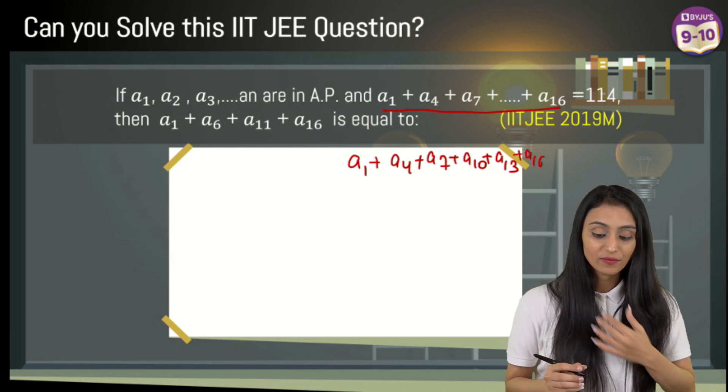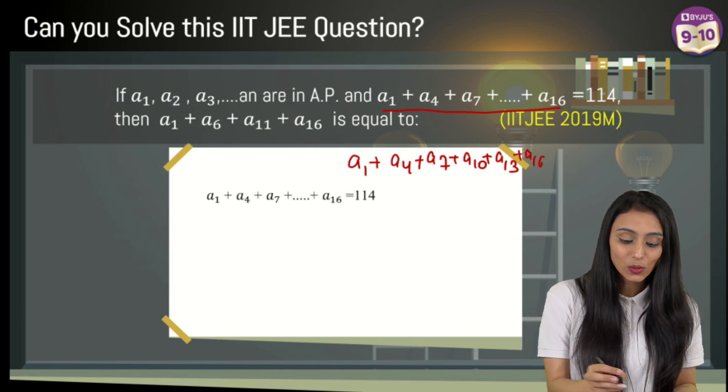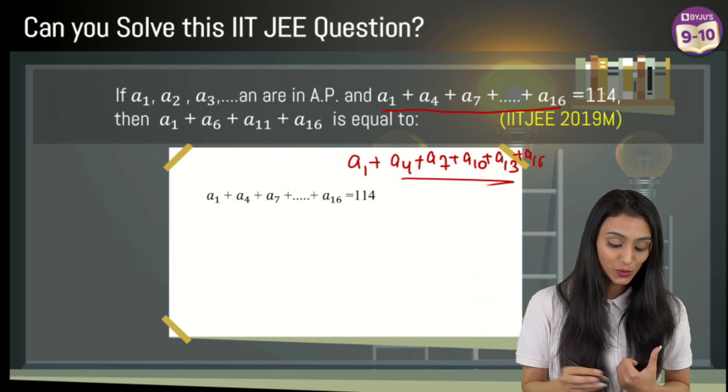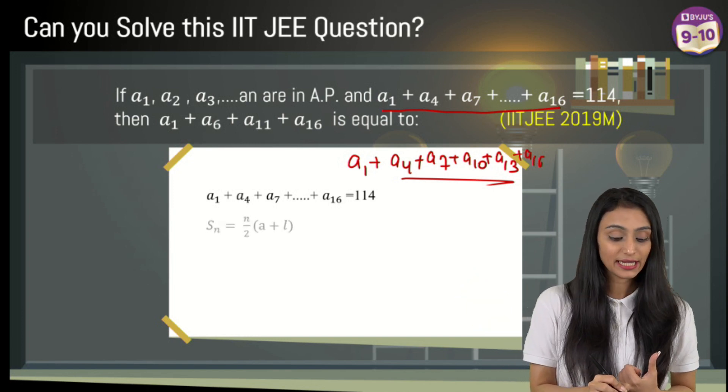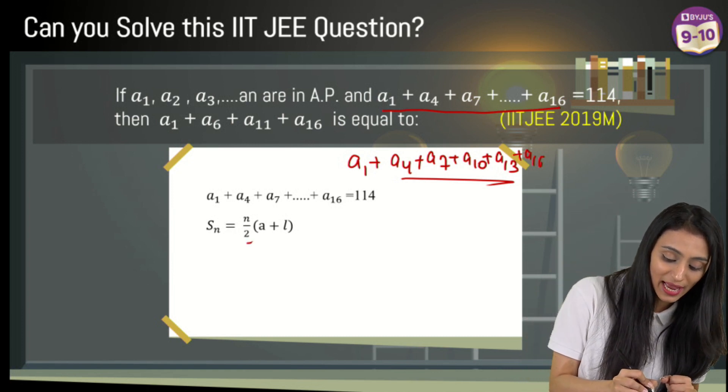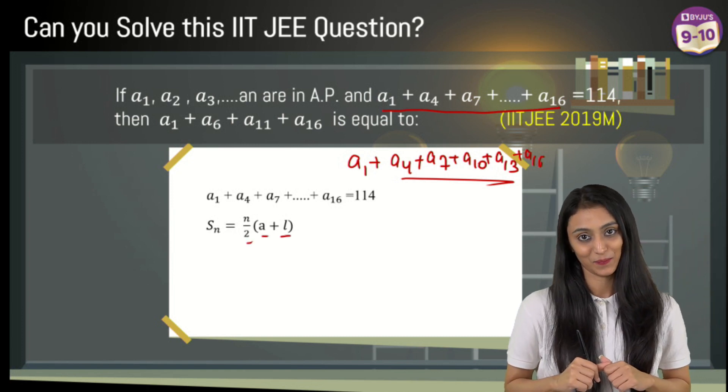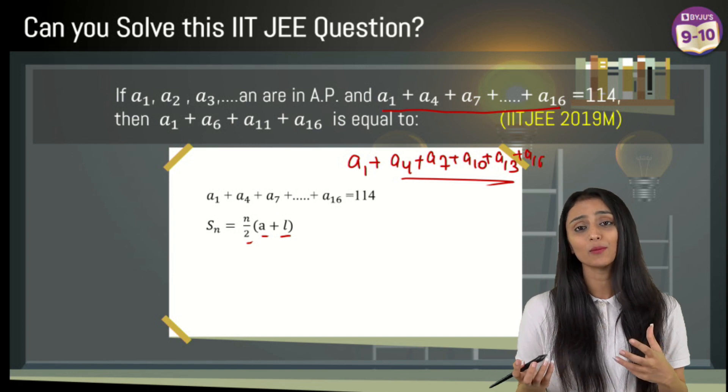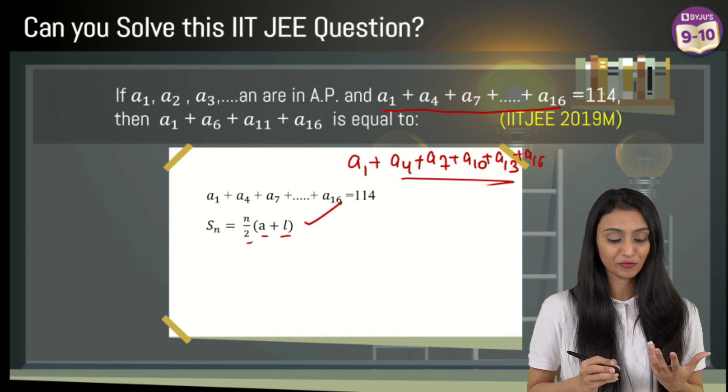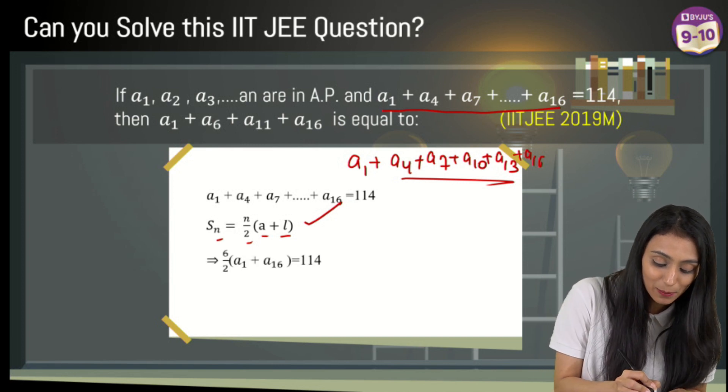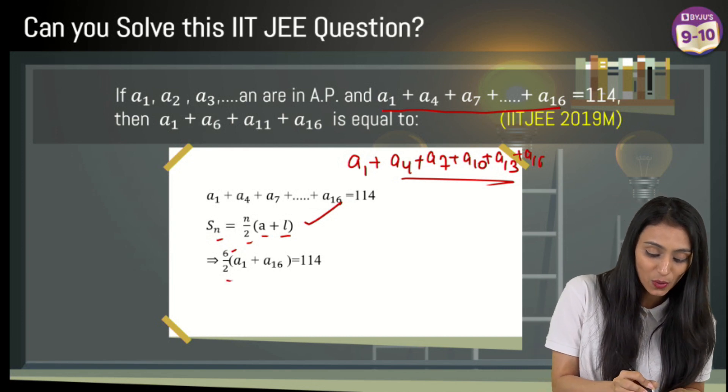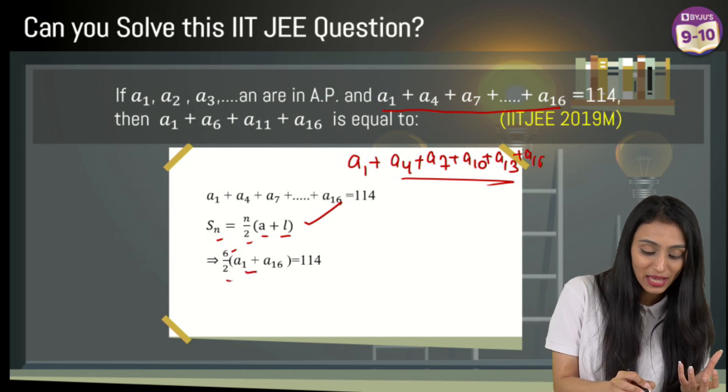We have a total of six terms. The sum of all these terms is 114. I'm using the formula for sum of n terms: n/2(a + l). I have the first term and the last term. We don't have the common difference, so it's better we use this formula. Total terms are 6, so I'm going to replace n with 6.